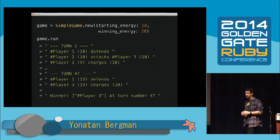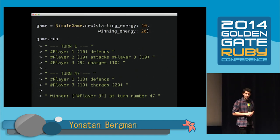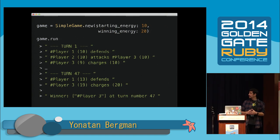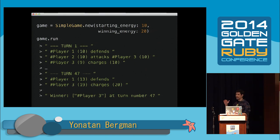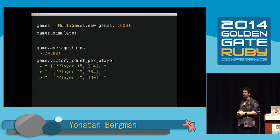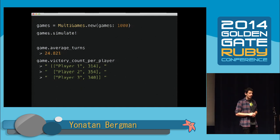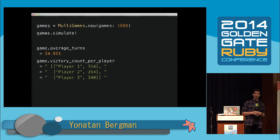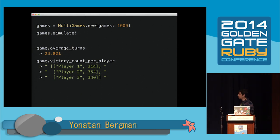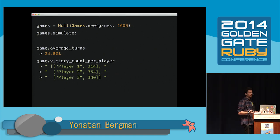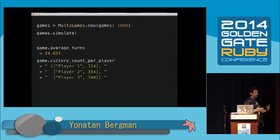My next version included winning by reaching a certain number of points — you input the starting energy and the energy required to win, and get a simulation. The output was very verbose; this is truncated because there were 47 turns in that game. I was simulating just one game at a time. The next step was to simulate multiple games each time, giving me a more statistical outlook on how the game plays as a whole. I looked at how long a game lasts given the random nature of the players, printing out the average number of turns and how many times each player won.